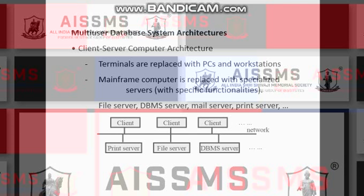Then comes the client-server computer architecture, which is influenced by the underlying computer technology — basically networking technology — and the usage of databases in terms of networking. Terminals and PCs are replaced with workstations, and the mainframe computer is replaced by a specialized server, called a blade server or database server. There are many types of servers available: file server, DBMS server, mail server, print server, etc. All these servers are connected in a network with the clients.